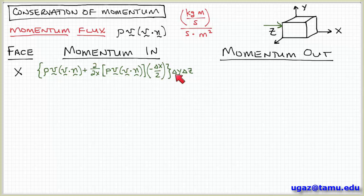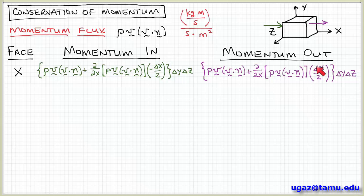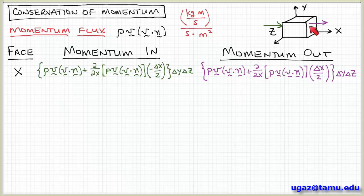Times the distance from the center to the left-hand face, which is minus delta x over 2, multiplied by the area of this face, delta y delta z. On the right-hand side face, I have the value at the center rho v times v dot n, plus the rate of change of rho v times v dot n over x, times the distance from the center to the right-hand face, delta x over 2, all multiplied by delta y delta z.